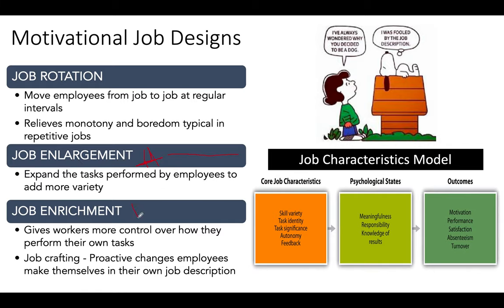Then we have job enrichment, which is a vertical enlargement of the job. Instead of going horizontal, we go top to bottom or bottom to top — it's vertical. You're moving from your current job and getting more responsibility, more decision-making authority, maybe at the manager level. We are giving you more control over how you perform your tasks, which should be more motivational because you now have more autonomy, more control, more decision-making power.